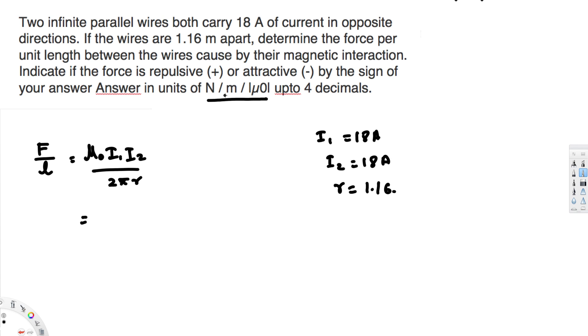They mentioned we need to give the final unit in Newton per meter per mu naught. So we shouldn't neglect mu naught because the final unit considers mu naught. We just keep this separately for now.